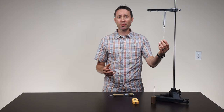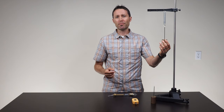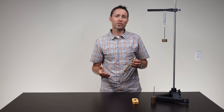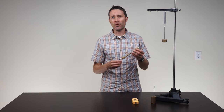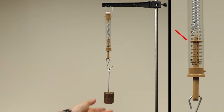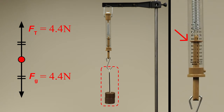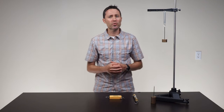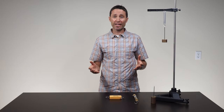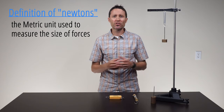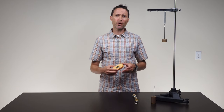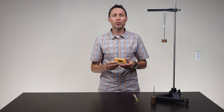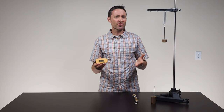Remind students that the farther a spring is stretched, the more force it exerts pulling back against the object stretching it. A spring scale is a device that uses this concept to measure the amount of tension in the spring based on how far it is stretched. If the masses are hung from a spring scale, students are now able to measure both the size of tension and the gravitational force. In my classroom, this is the first time students have measured the size of any force, so I use this data collection discussion to introduce newtons, the metric unit used to measure the size of forces. This is also where you can introduce force sensors or digital newton meters.